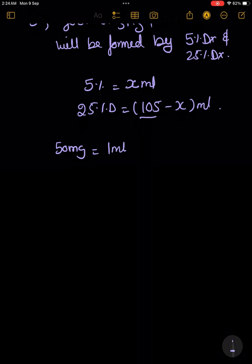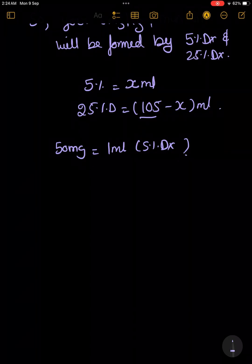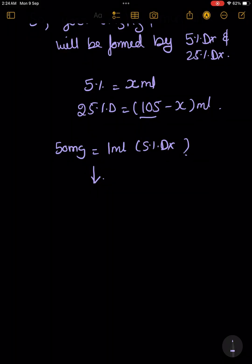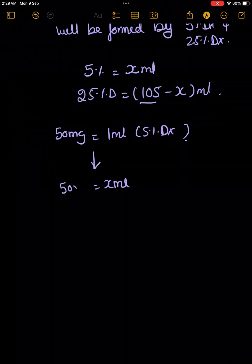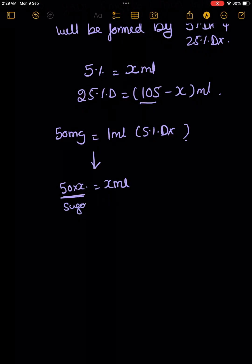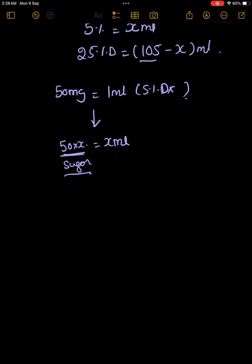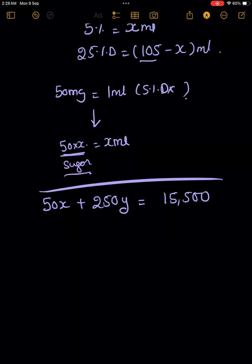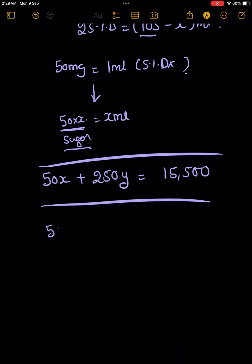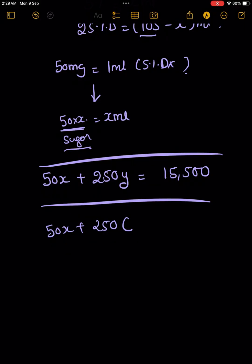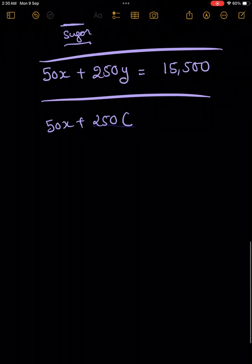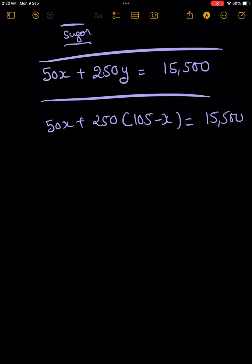Since 1 ml of 5% dextrose contains 50 mg of sugar, giving x ml means 50x mg of sugar. Similarly, 1 ml of 25% dextrose contains 250 mg, so y ml gives 250y mg. Therefore the equation is: 50x + 250y = 15,500 mg. Substituting y = 105 − x into the equation gives us everything we need to solve for x.